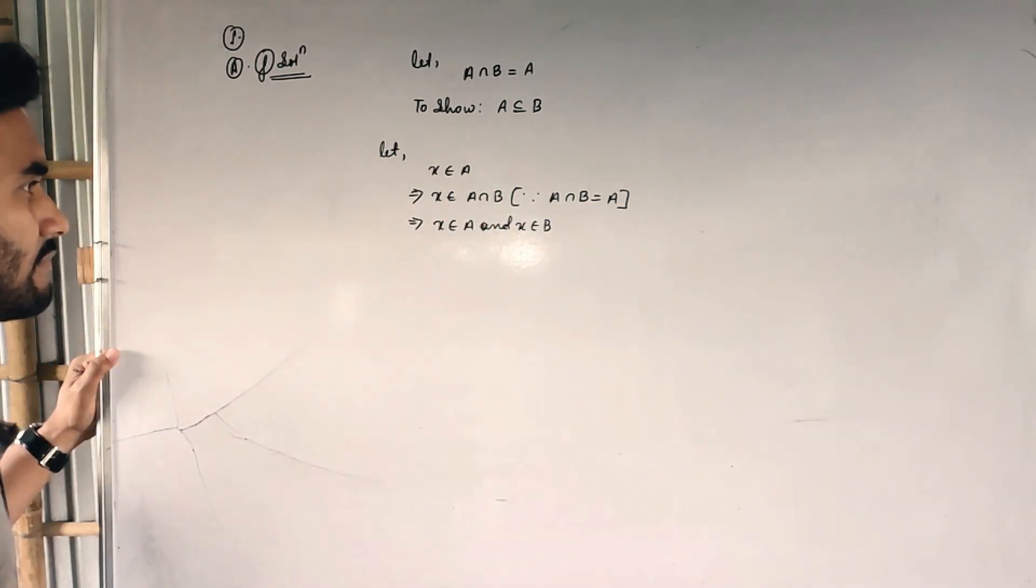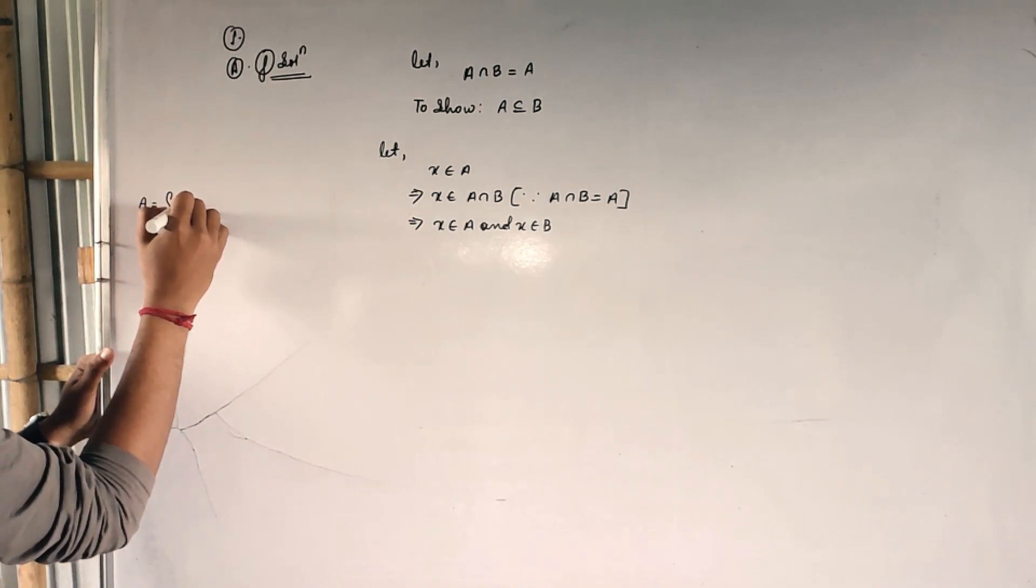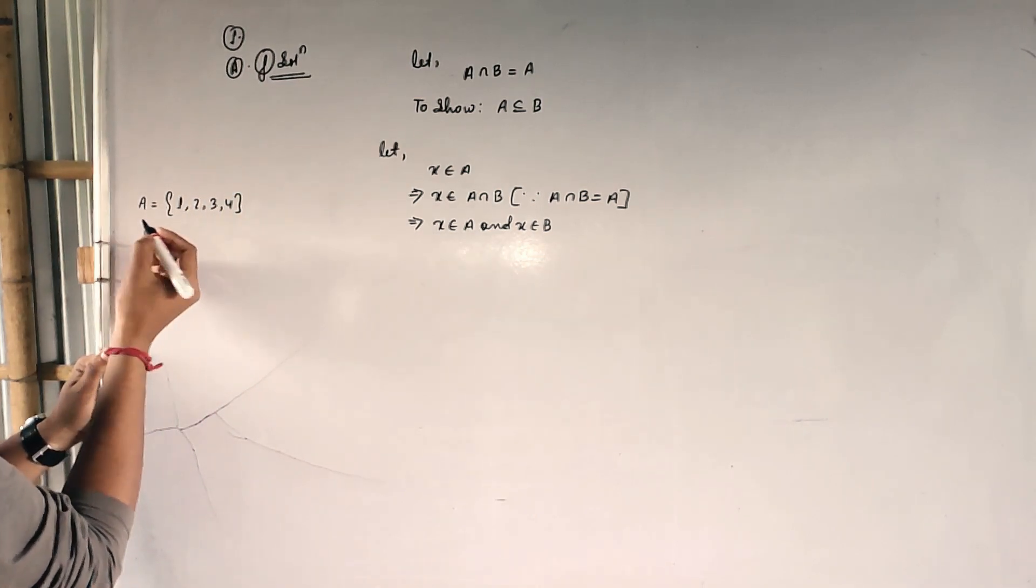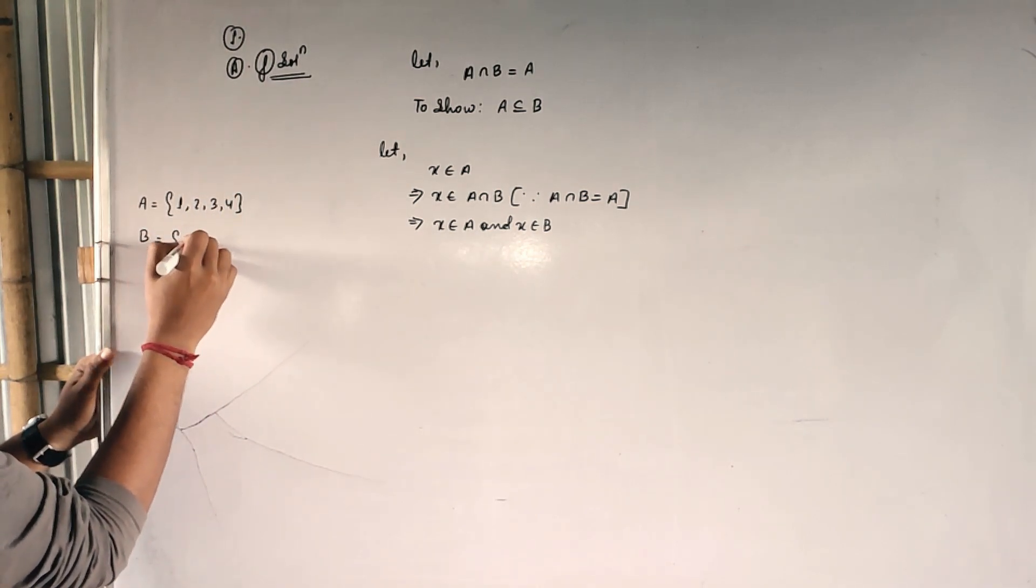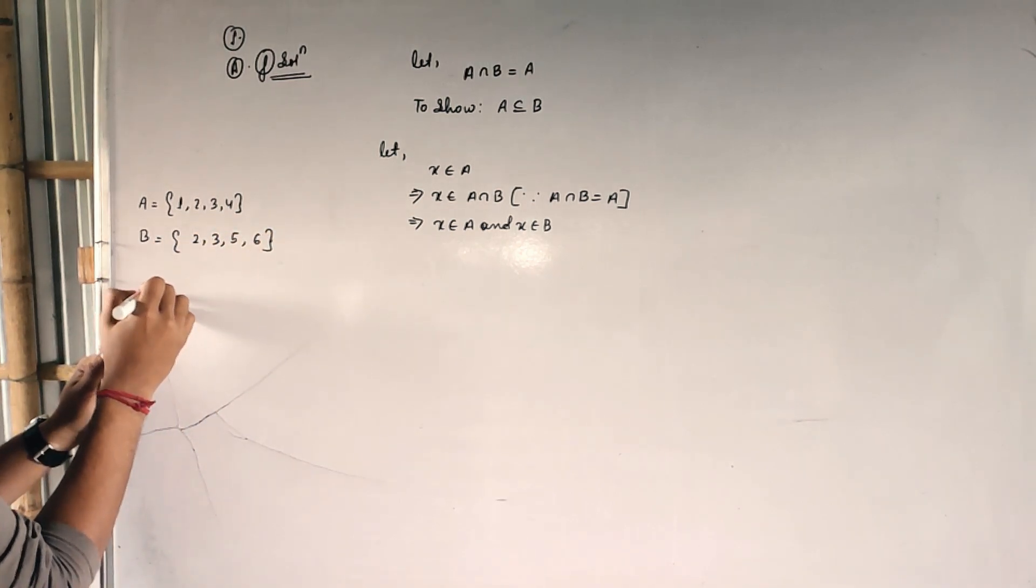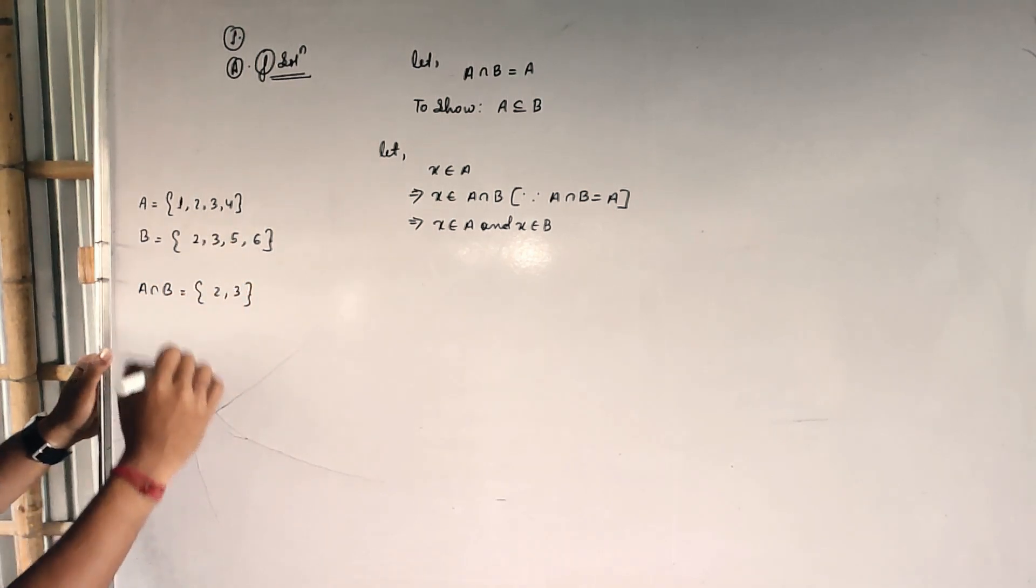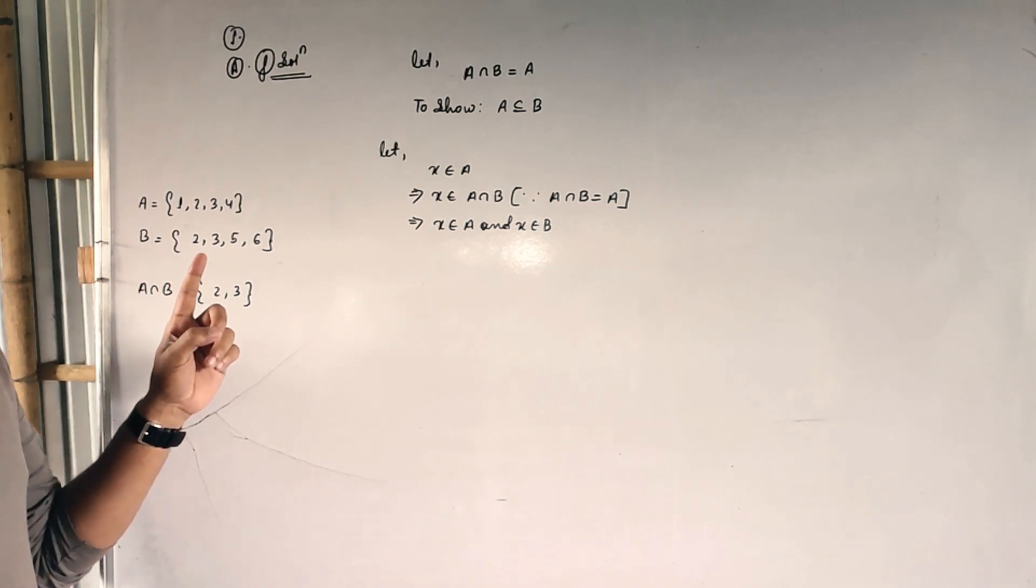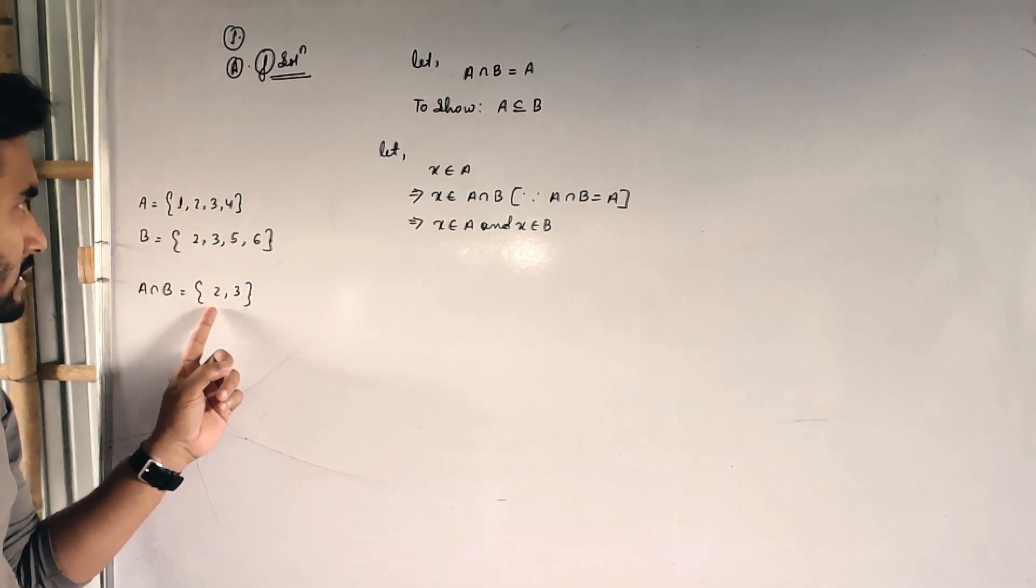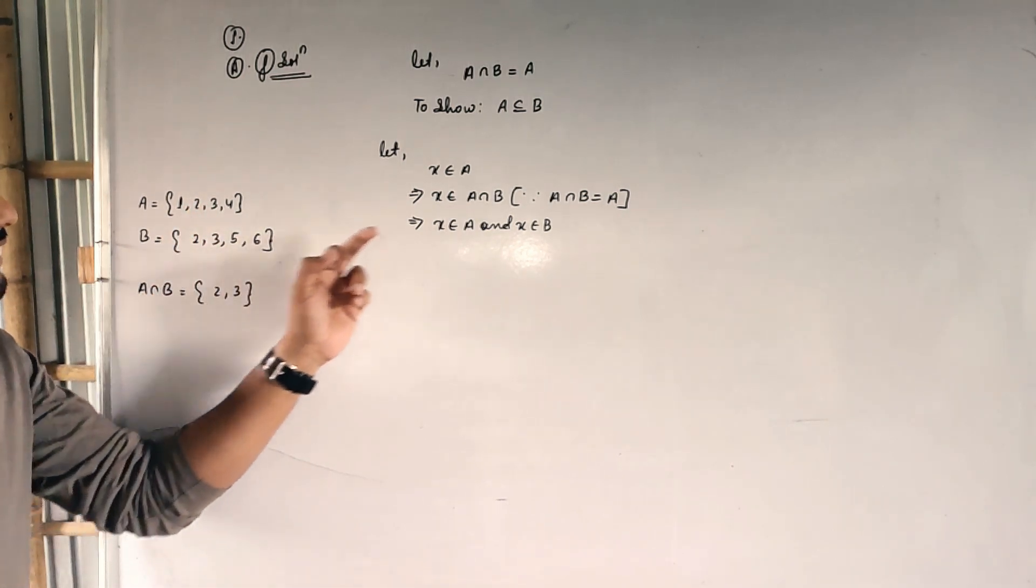Let us take an example. Suppose A is equal to 1, 2, 3, 4, okay? And B is equal to say 2, 3, 5, 6. So then A intersection B will be equal to, A intersection B will be equal to, obviously 2 and 3, right? 2 and 3. Now you see, X belongs to A intersection B. Suppose 2 is X. If 2 belongs to A intersection B, then obviously 2 belongs to A and 100% 2 belongs to B.